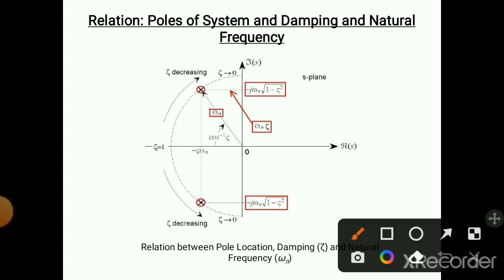This entire plane is called the s-plane. When we use the transfer function, our equations are converted into the s-domain, which is why we call it the s-plane. We have marked two poles in this graph — one pole here and one pole over here, so two poles are marked.